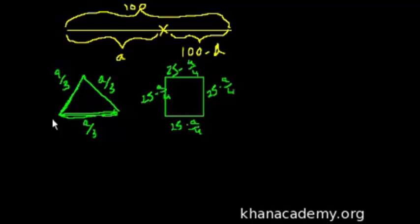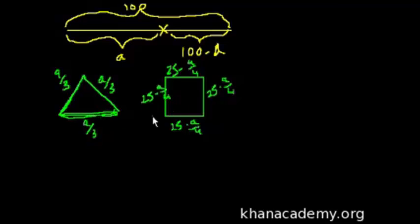They want us to find what value of a minimizes and maximizes the sum of the two areas. So what are the sum of the two areas? What's the area of this triangle? I always forget the formula for the area of equilateral triangles, so we'll have to derive it right now.